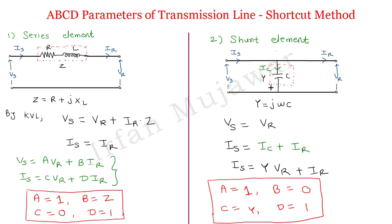Here Y can be expressed in terms of capacitance as jωC. Using these ABCD parameters of the series element and shunt element, we can calculate the ABCD parameters of all transmission lines. For the short line, the ABCD parameters are simply the same as those of the series element.